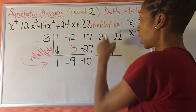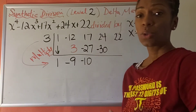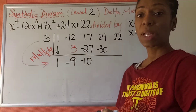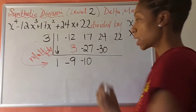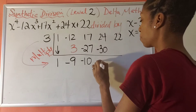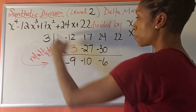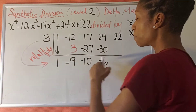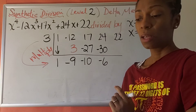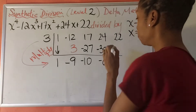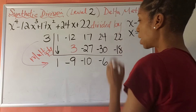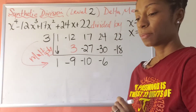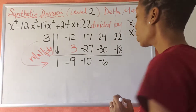And then we add 24 plus negative 30, which is negative 6. Then we multiply: 3 times negative 6 is negative 18. And then we add to get 4.